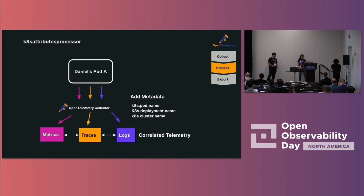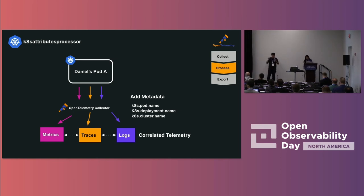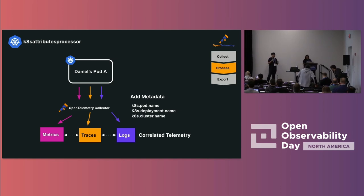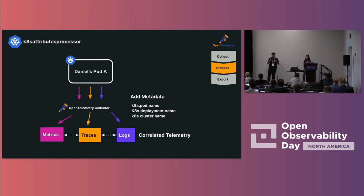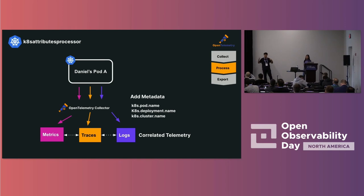Once data is in the pipeline, how do we increase its usefulness? A really cool processor is the Kubernetes attributes processor, which dramatically increases the value of logs, traces, and metrics from your application. The OpenTelemetry Collector with this processor injects metadata about your pod and deployment, so in the backend you can correlate application-level metrics with infrastructure-level metrics. For example, if you have spikes in error rate or latency, you can immediately correlate that with CPU usage or other infrastructure metrics to ping the right person during an outage.